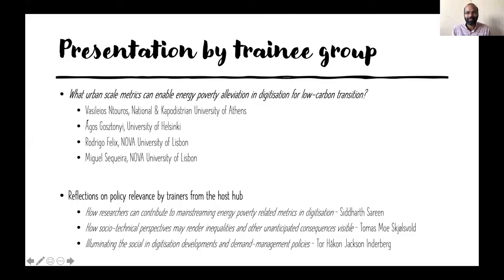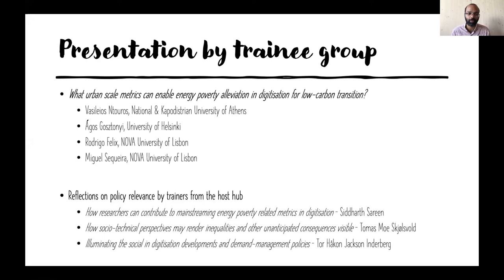Welcome back everyone for the final session from the Norway hub. We have a presentation by the trainee group — Vasiles, Akosh, Rodrigo, and Miguel — giving a 15-minute talk on the question: what urban-scale metrics can enable energy poverty alleviation in digitization for low carbon transition? This is closely related to the theme of the hands-on workshop. Afterwards, Thomas, Tor, and Siddharth will each spend about five minutes reflecting on the policy relevance of the work discussed in this hub.